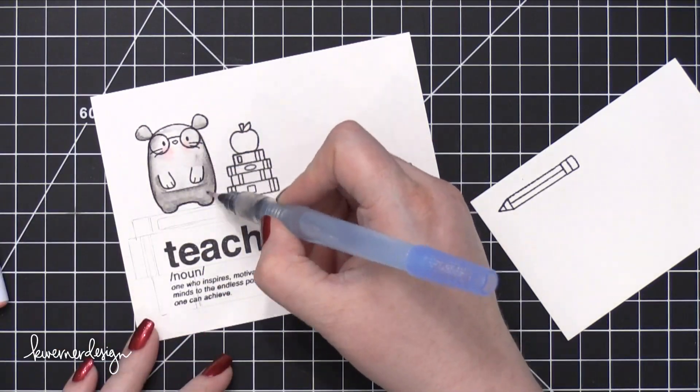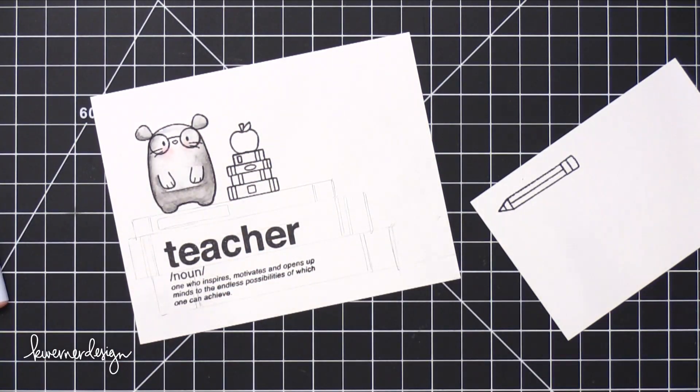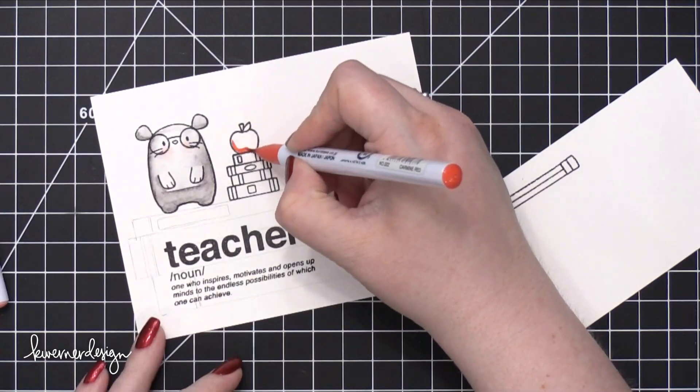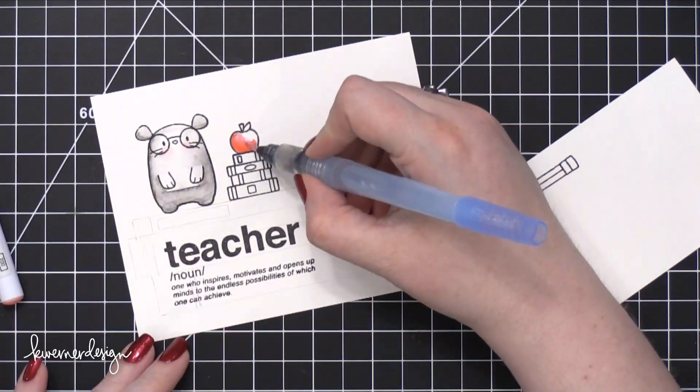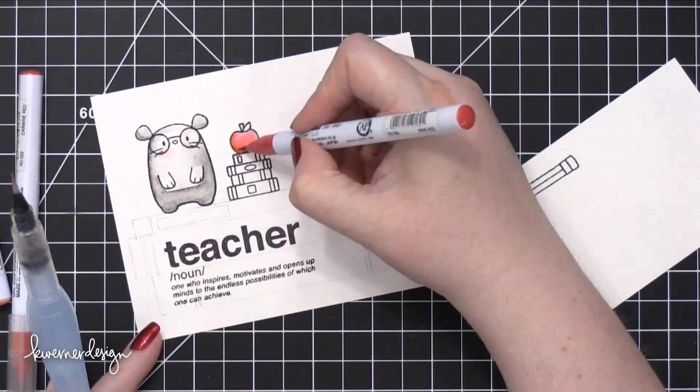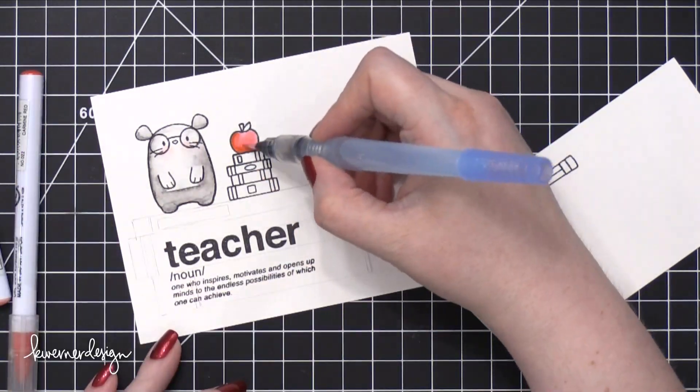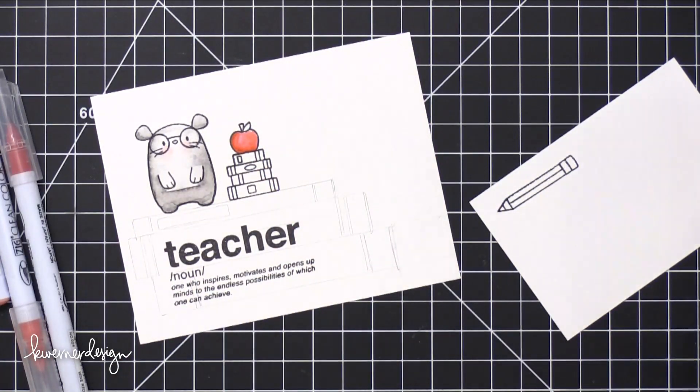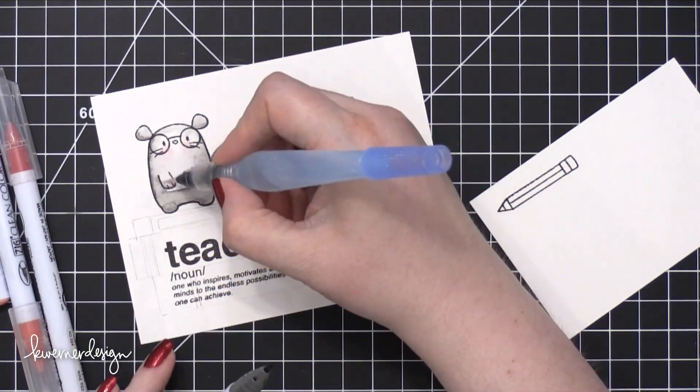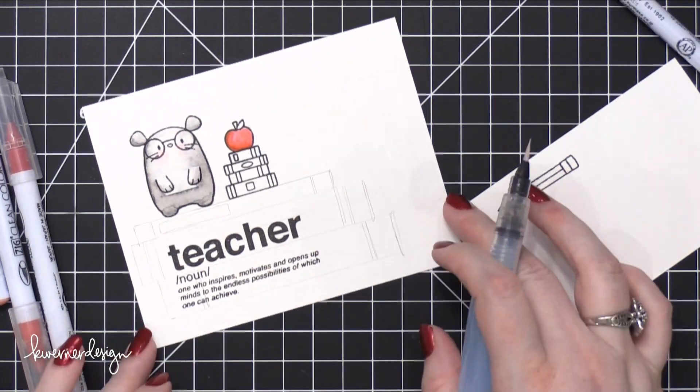I also stamped a pencil off to the side on another piece of Bristol paper and I'm planning to have that pencil go underneath the mouse's arms. So I'm only painting up into the bottom edge of his arms because that pencil's going to be over the top in the way anyway.